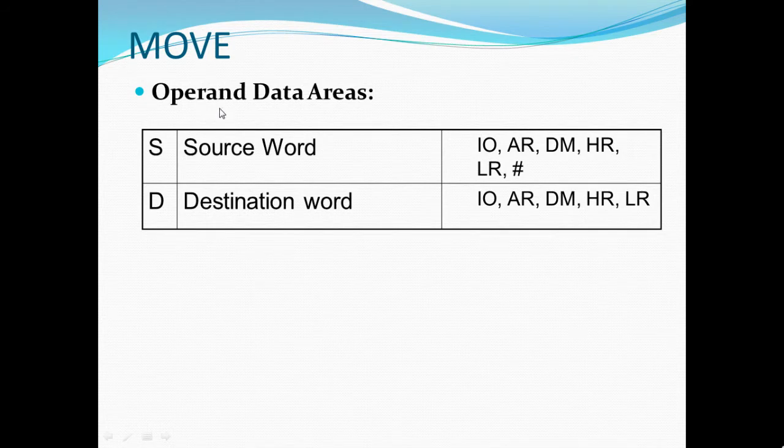Operand data areas: S source word - IO, AR, DM, HR, LR and direct copy data. D destination word - IO, AR, DM, HR, LR.